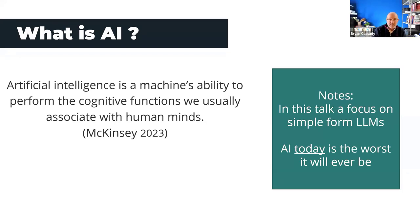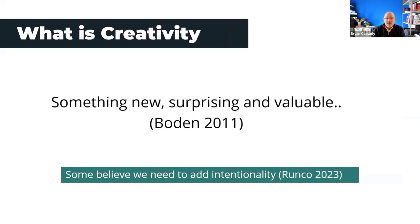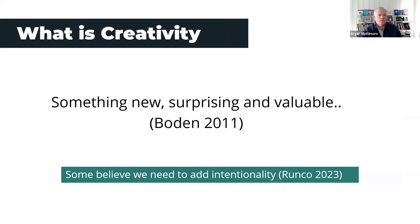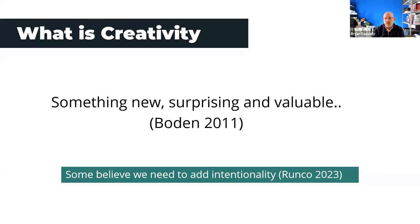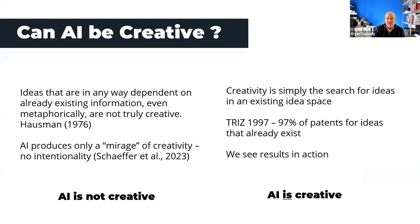The second question is: what is creativity? It's a hard thing to define. The best definition comes from Boden — something new, something surprising, something valuable. But there's been a move to revisit that, because when you evaluate AI against human beings using those criteria, AI tends to beat humans. So some people want to add to or change the definition.